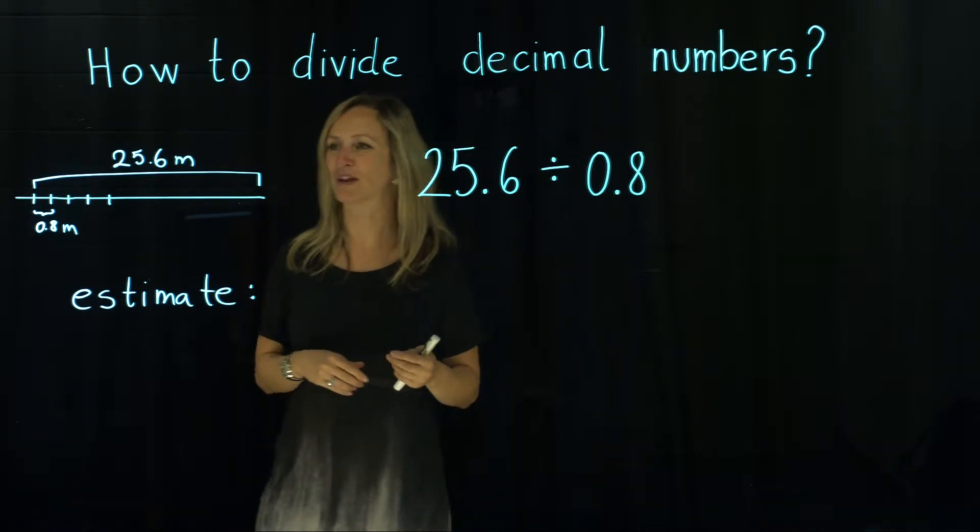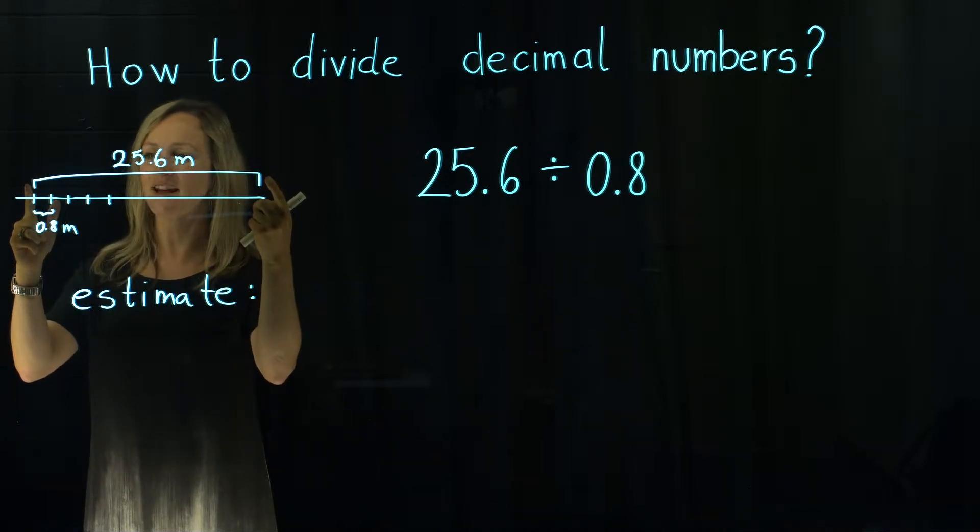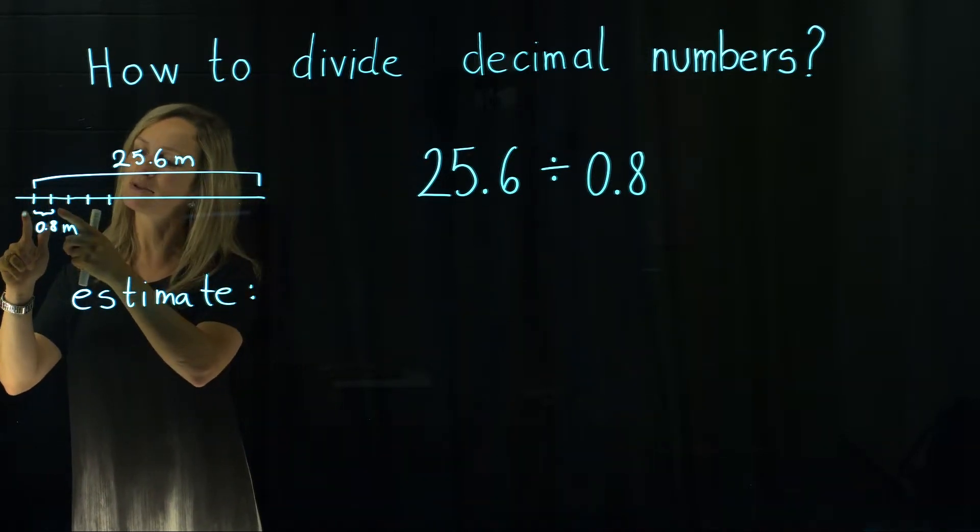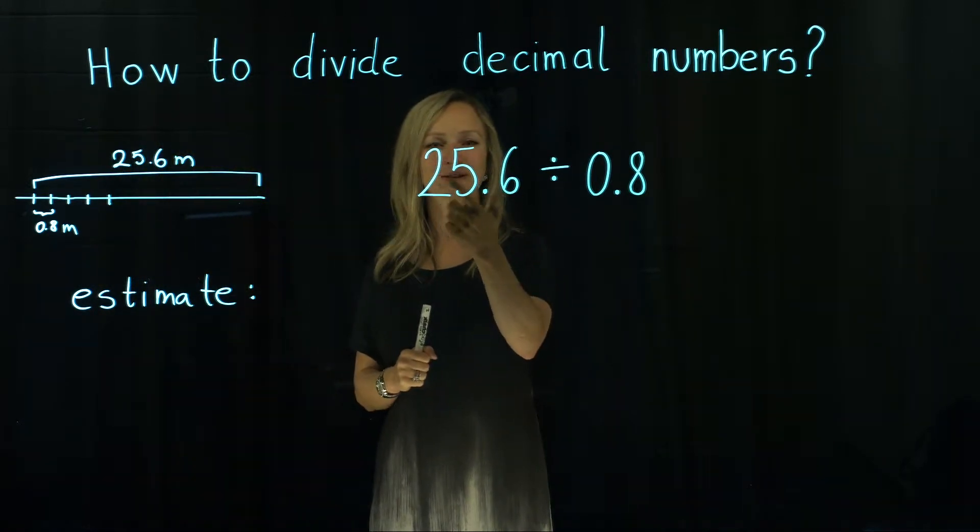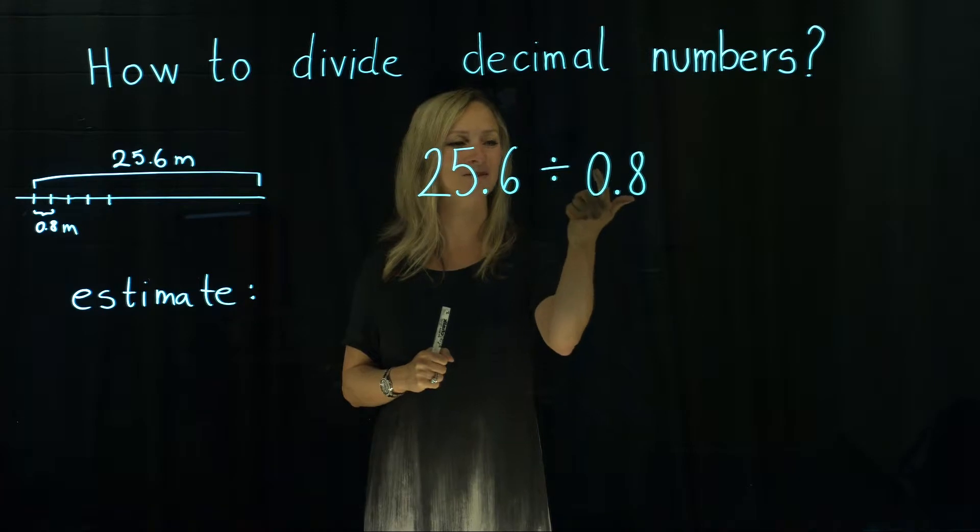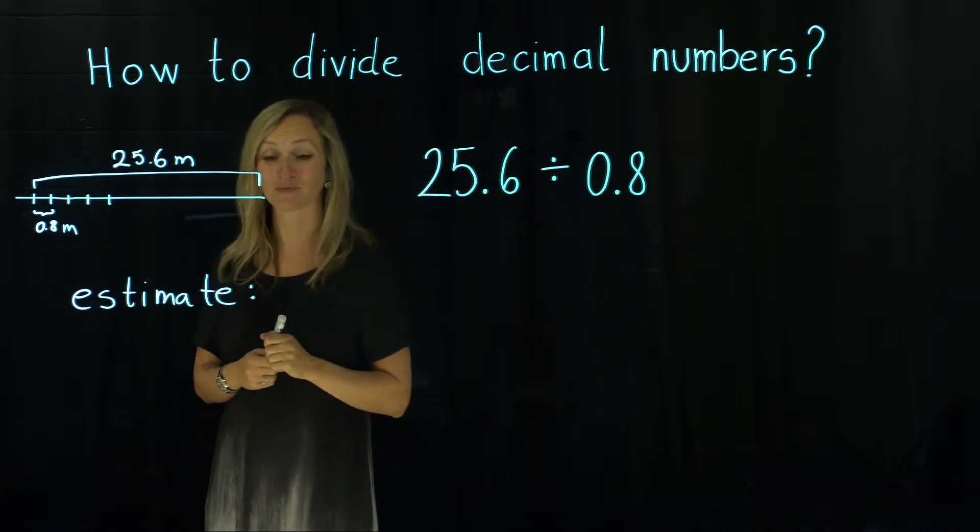To get that we need to actually look at our whole distance and then divide by the amount between two plants. So we're going to do the division of 25.6 divided by 0.8 and we will get the amount of plants we need for our hedge.